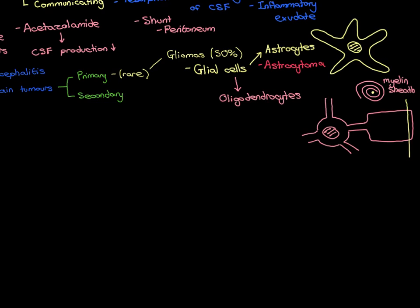If you get a primary brain tumour derived from oligodendrocytes — consisting of oligodendrocytes all over-dividing — what is that called? It is another form of glioma called an oligodendroglioma. So gliomas are the most common form of primary brain tumour, derived from glial cells. The two major examples are astrocytes giving rise to astrocytomas, and oligodendrocytes giving rise to oligodendrogliomas.